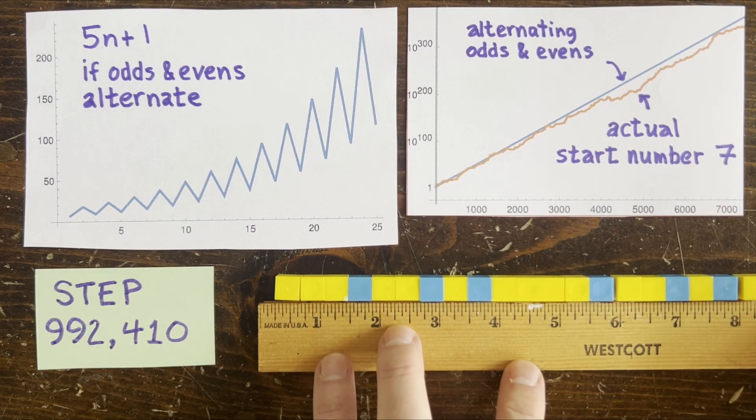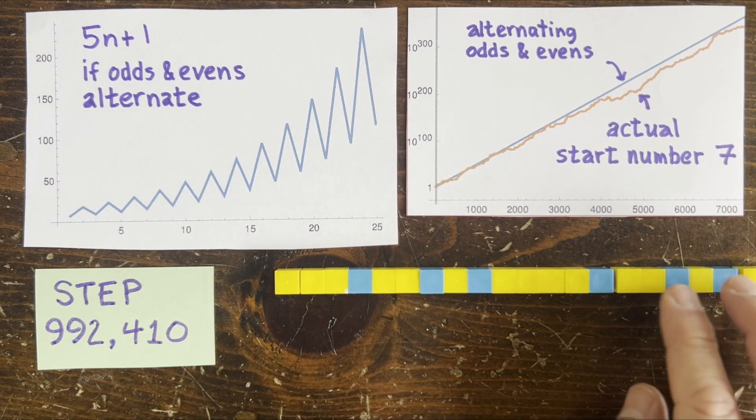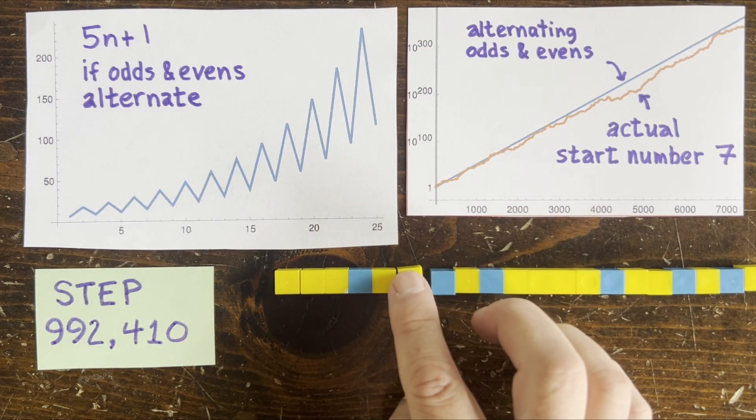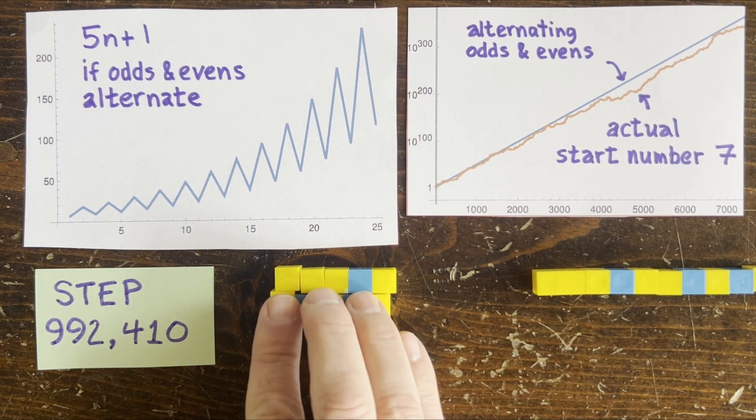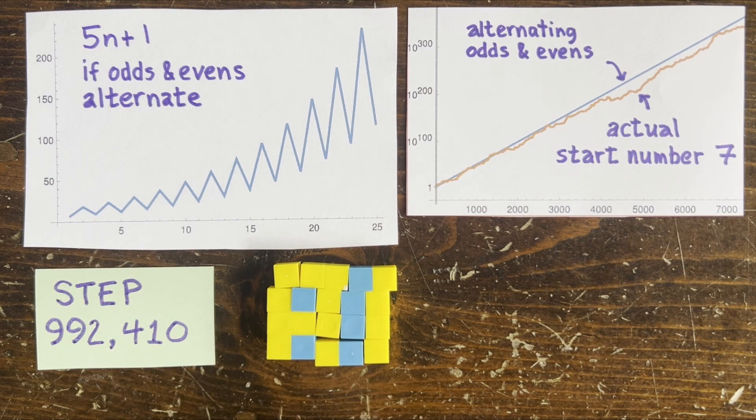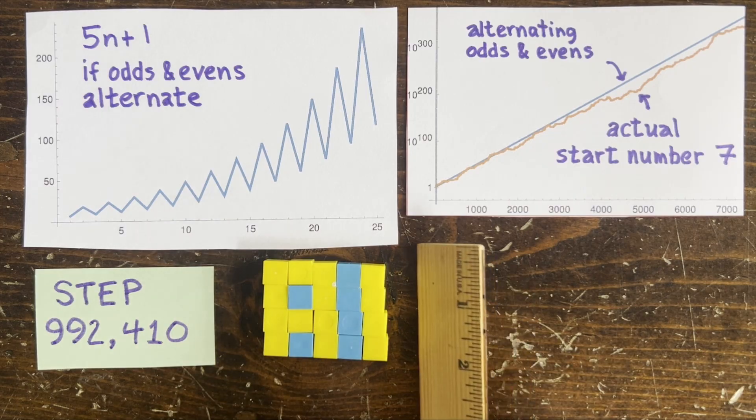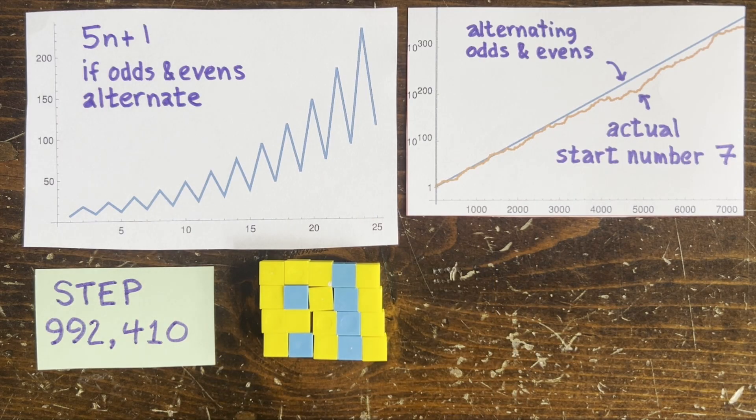In fact, if you go out to step 992,410, you see this sequence of evens and odds. Which, if you arrange them into a rectangle, it spells AI. A little shout out to our future overlords. And if you keep going, probably you could eventually find a high-resolution image of Winston Churchill, or maybe another face on Mars, like the fictional library of Babel described by Borges. Maybe everything's in there.